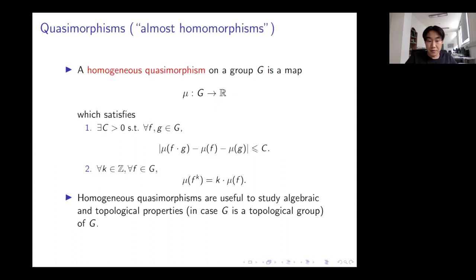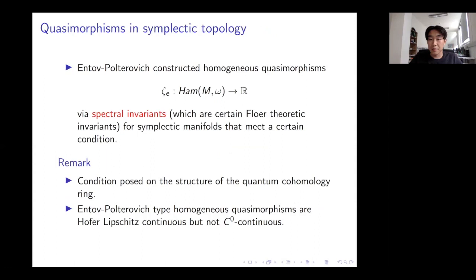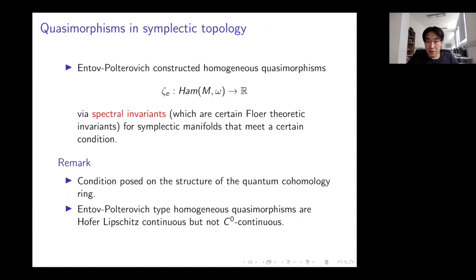These maps are useful to study algebraic and topological properties of the group. The construction I want to focus on is due to Entov and Polterovich, who constructed homogeneous quasimorphisms using symplectic spectral invariants from Floer theory, for symplectic manifolds satisfying a certain condition about the structure of quantum cohomology. Notably, these Entov–Polterovich type quasimorphisms are Hofer-Lipschitz continuous but not C⁰-continuous.